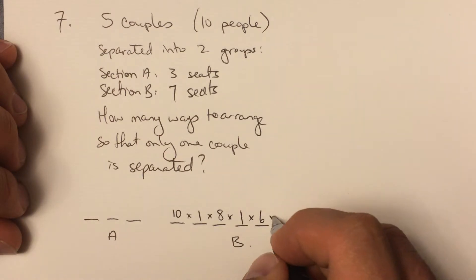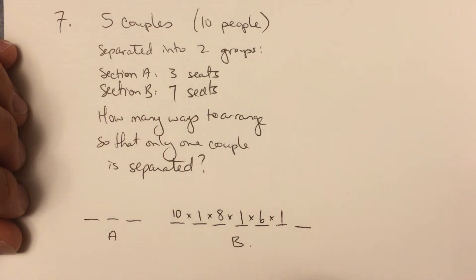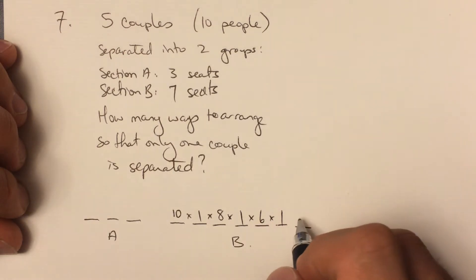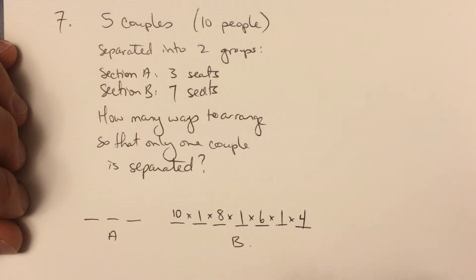Six people available for that spot. That leaves a partner to sit next in this seat. And then now we have four people that are available to select that last seat. Now you may be looking at this saying, well, what if that lone person that's not part of a couple had sat over here somewhere?